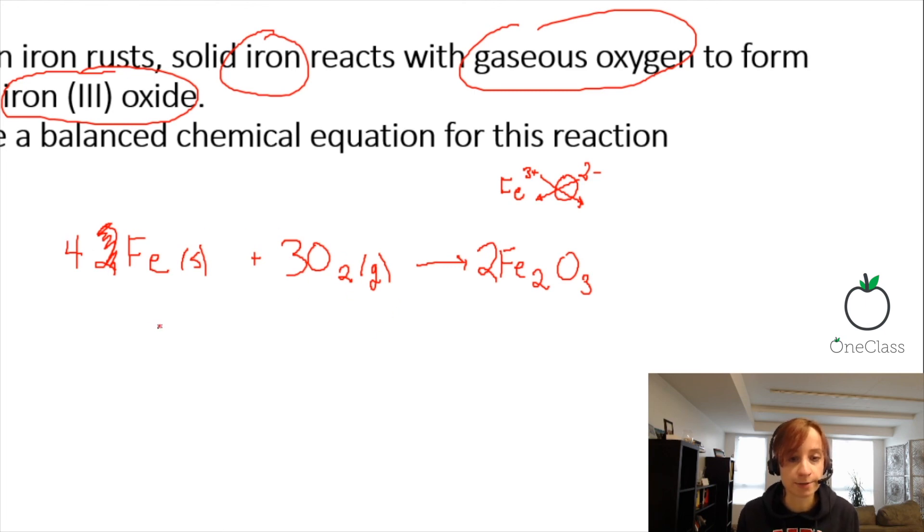So 4 irons on the reactant side, 4 irons on product, 6 oxygens on reactants, 6 oxygens on the products. So this is now a balanced chemical equation.